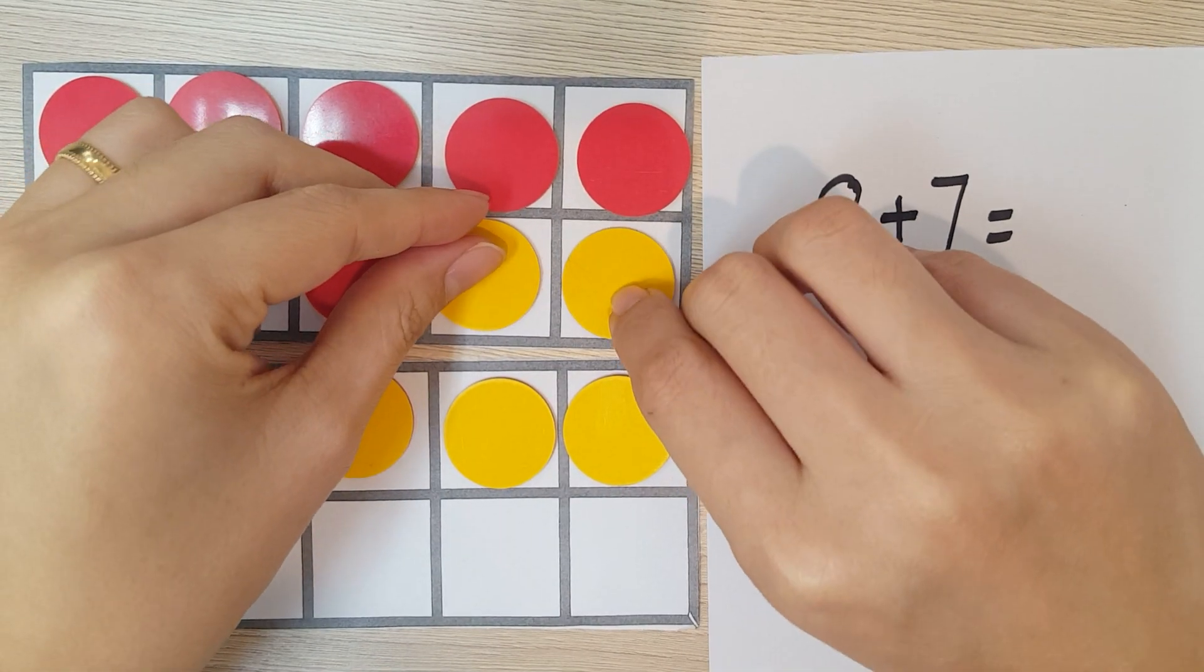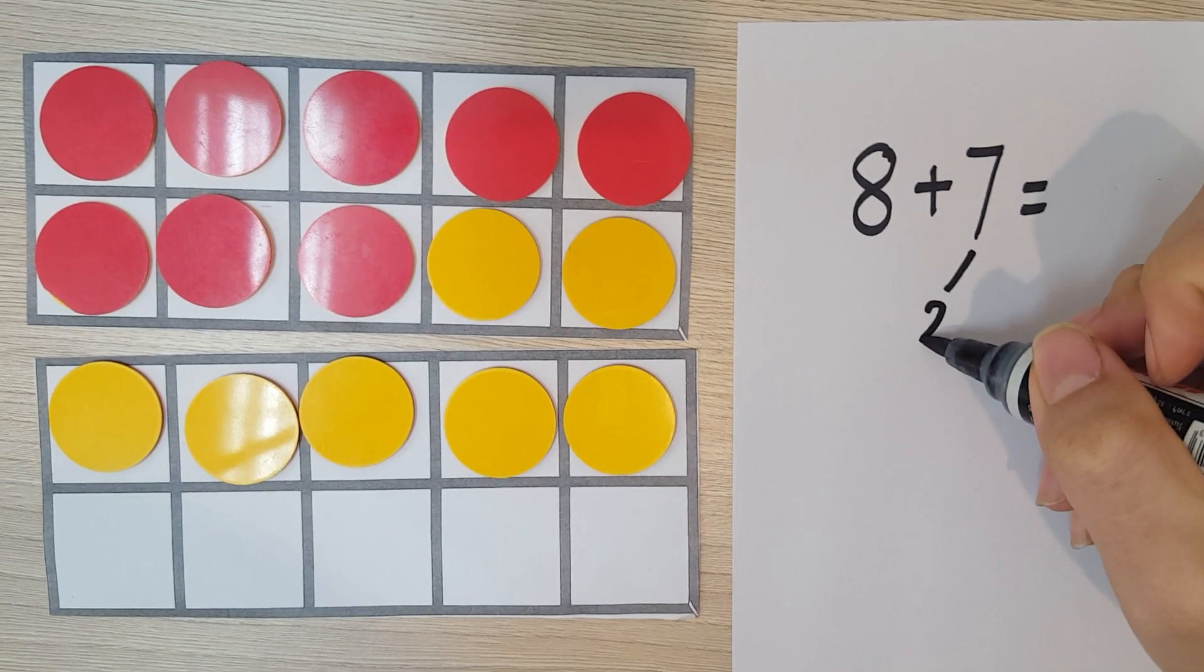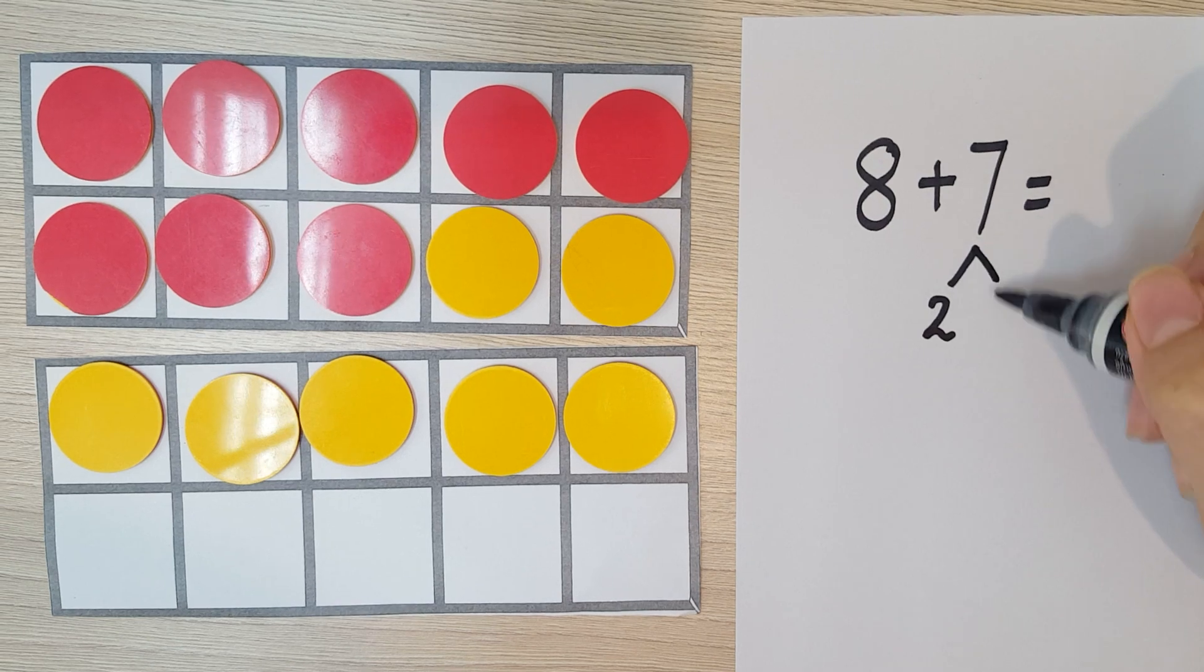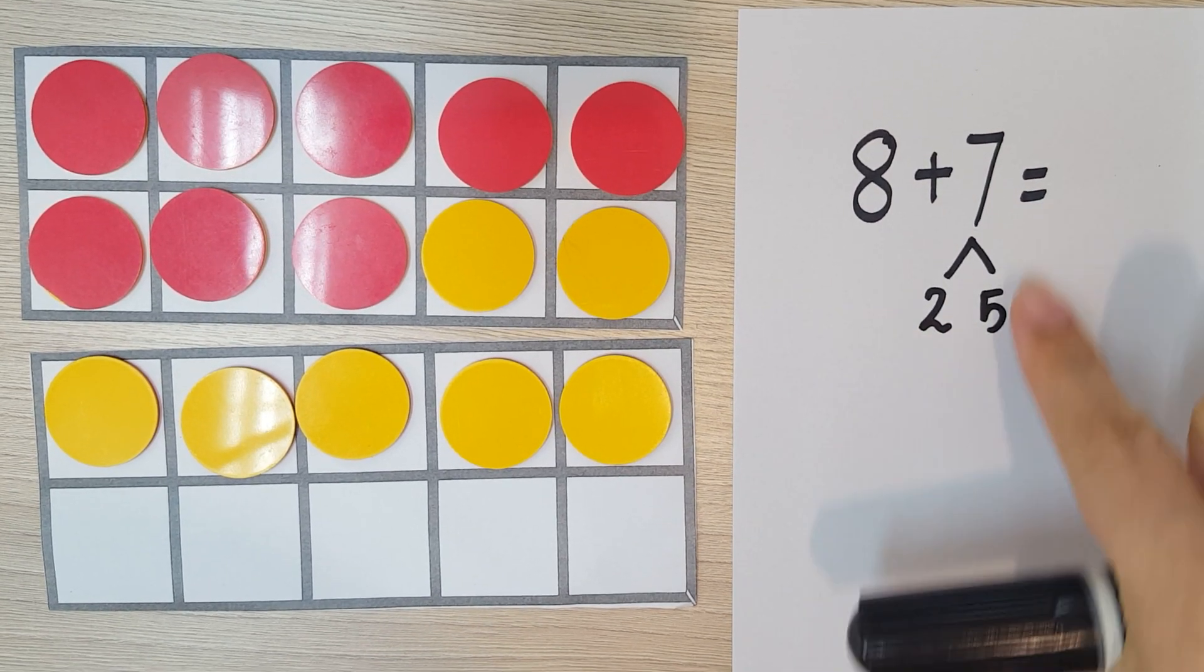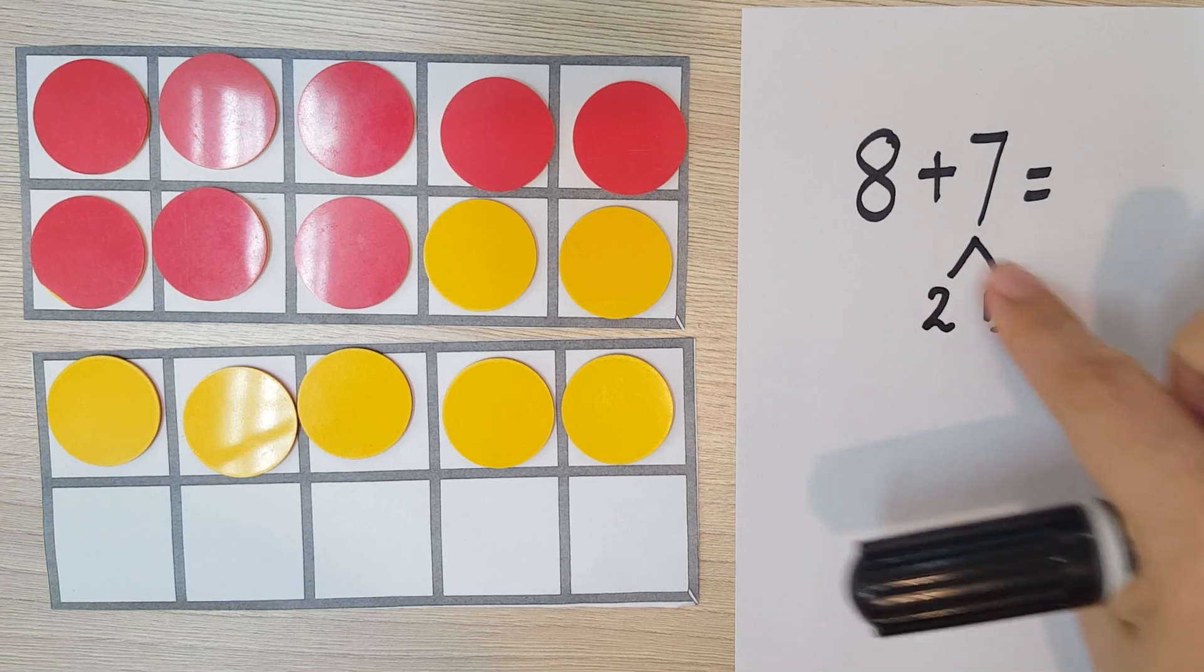Okay, so I took the 2 from the 7, yes, and I have 5 left here. And as you can see, 2 and 5 make 7, so the number does not change. It is still 7, but we broke it into 2 and 5.